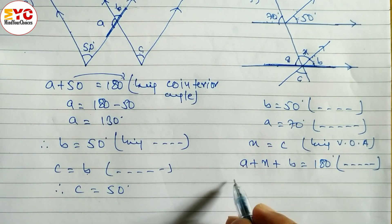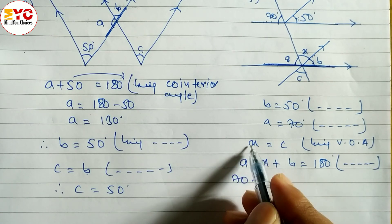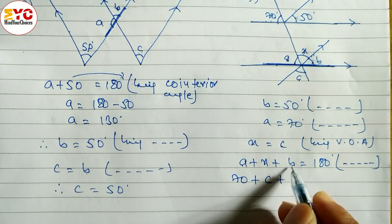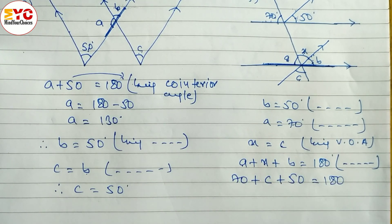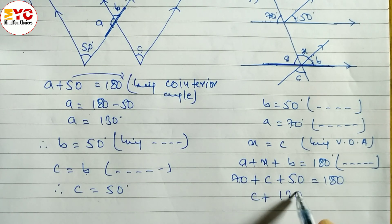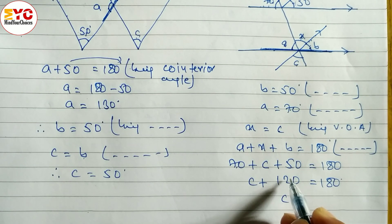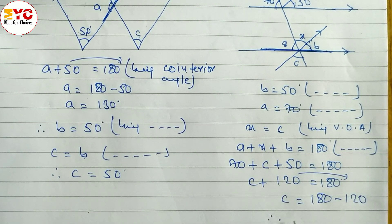What is the value of a? 70. So we have to write 70 plus x. What is the value of x? x is equal to c. So in the place of x we can write c. What is the value of b? 50. So we have to write 70 plus c plus 50 is equal to 180. c plus 120 is equal to 180. So c is equal to 180 minus 120. Therefore the value of c is equal to 60 degrees.